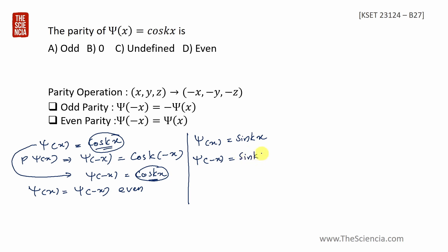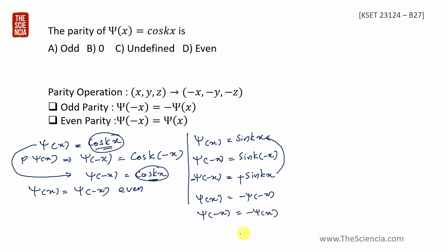For ψ(x) = sin(kx): ψ(−x) = sin(k·(−x)) = −sin(kx) = −ψ(x). This is the condition for odd parity. So cos(kx) satisfies the even parity condition. The answer is even parity.